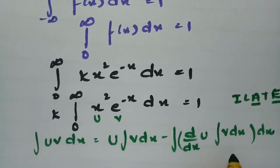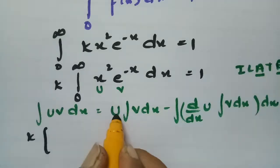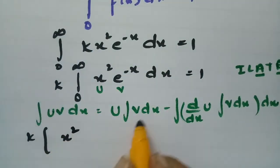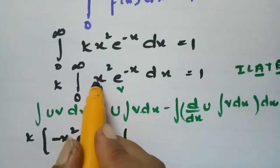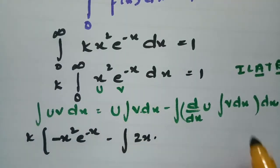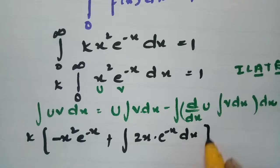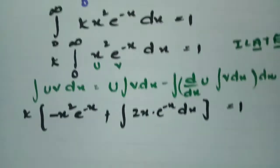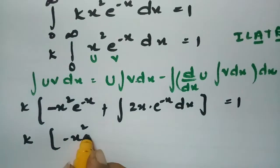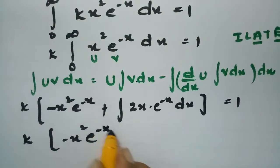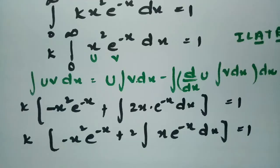Applying the formula: k times [u left as is, v integrated to −e^(-x), minus the integral of (derivative of u = 2x) times (integration of v = −e^(-x)) dx] equals 1, between limits 0 to infinity. This gives k times [−x²e^(-x) + 2∫x·e^(-x) dx] = 1.